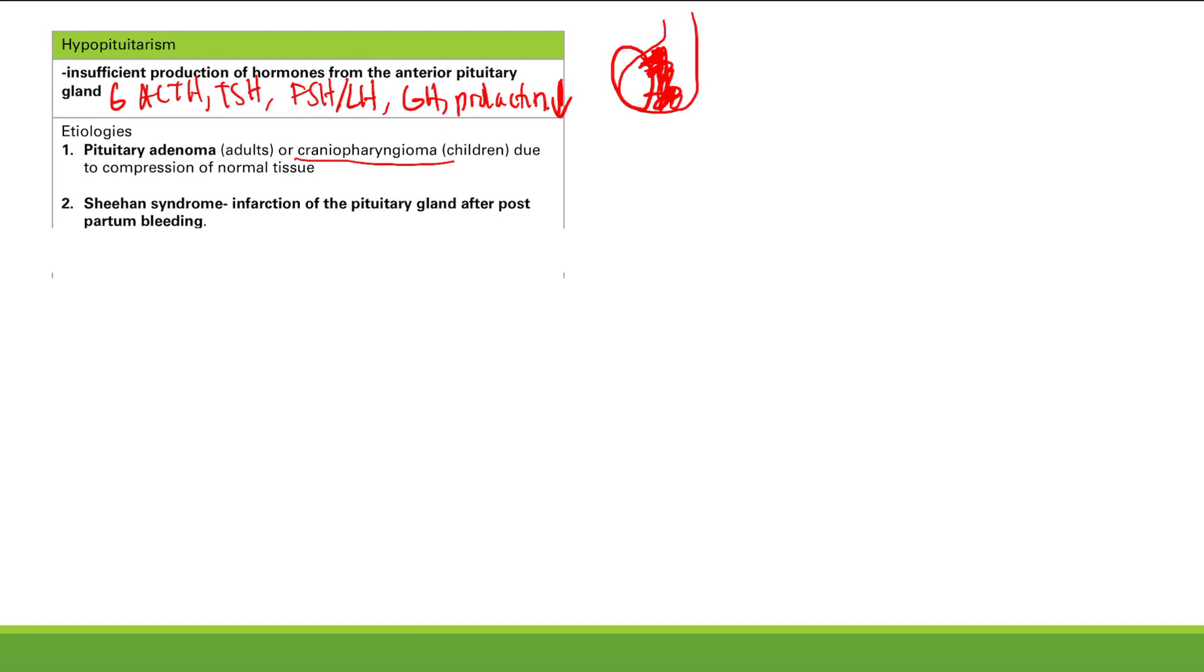Next is Sheehan syndrome. This is an infarction of the pituitary gland after postpartum bleeding. This is our anterior pituitary gland, poorly drawn.